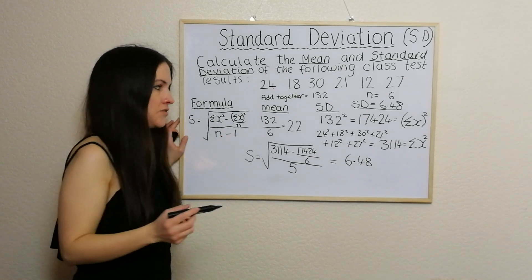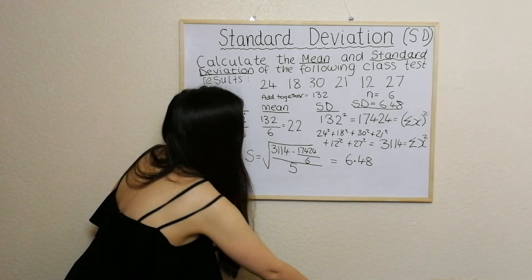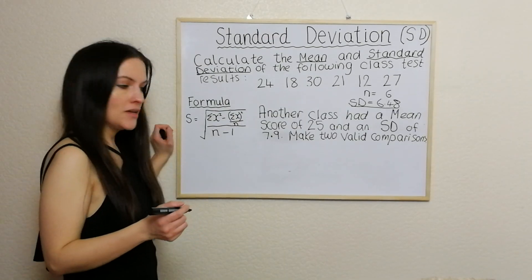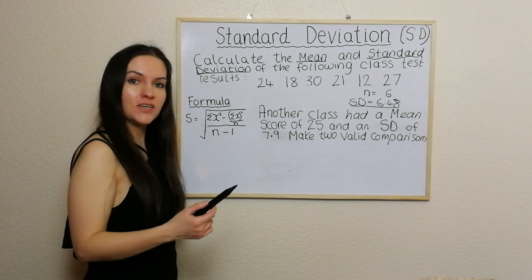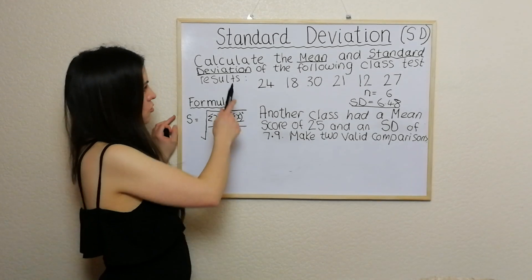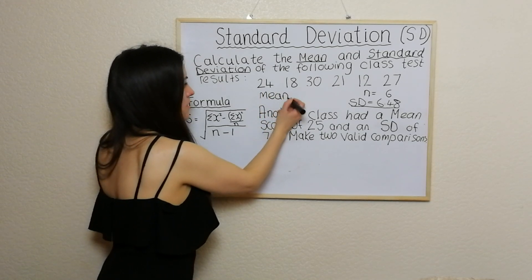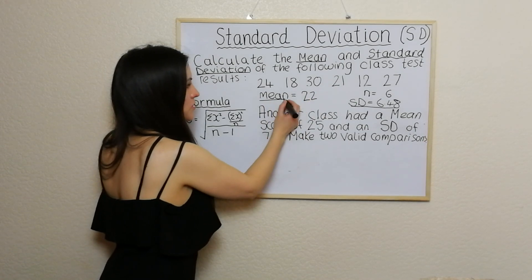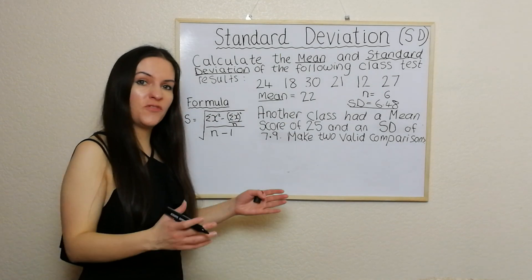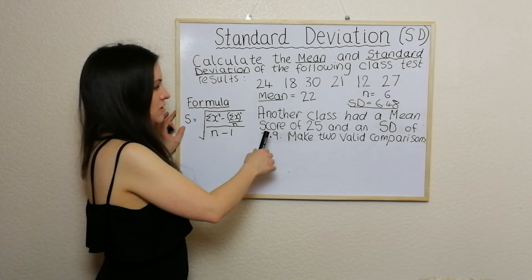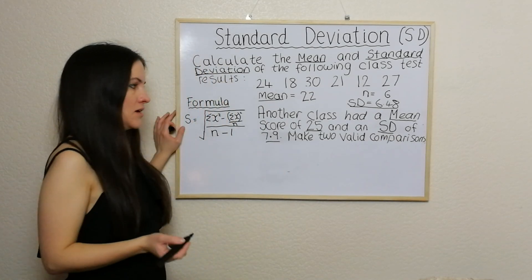So our mean was 22 and our standard deviation is 6.48. I'm going to move on to what would usually be the second part of this question, where you have to make a comparison. This part gives you the mean and standard deviation of another set and you have to make two comparisons. The mean score was 22 and the standard deviation was 6.48 for the first class. Another class had a mean score of 25 and a standard deviation of 7.9, and we have to make two valid comparisons.